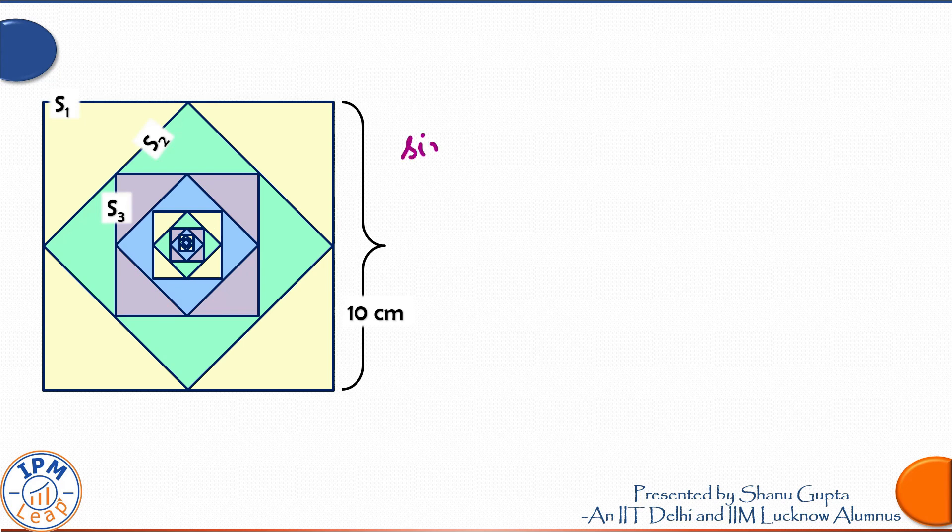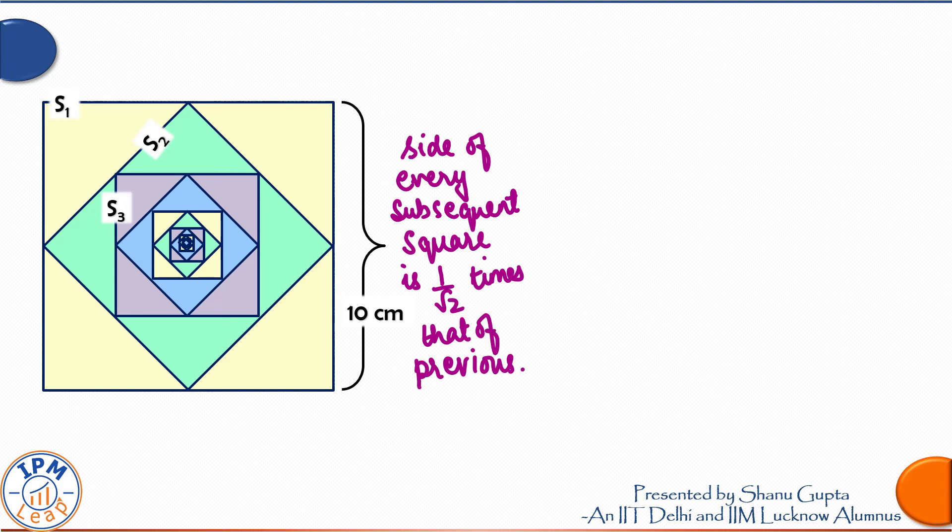If side of outer square is x centimeter, side of inner square is x upon root 2 centimeter. So a very important inference here is that the side of every subsequent square is 1 upon root 2 times the side of outer square.